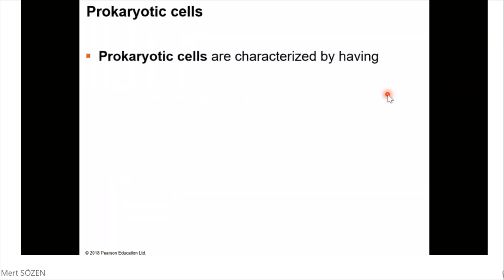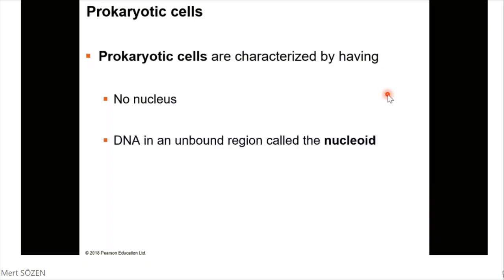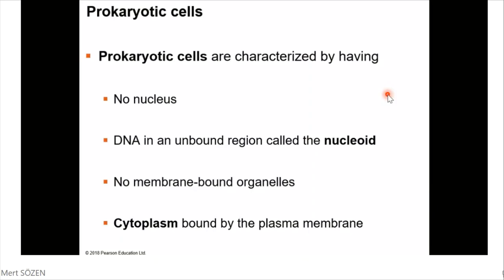Prokaryotic cells are characterized by having no nucleus, so there is no separated nucleus in prokaryotic cells. DNA is in an unbound region called the nucleoid. So DNA is not separated from the other parts of the cell — it is directly present in the cytoplasm, but found in a specialized region called the nucleoid. There are no membrane-bound organelles in prokaryotic cells. The cytoplasm is bound only by the plasma membrane, so there is only one membrane in prokaryotic cells — the cell membrane. There is no other membrane inside the cell.